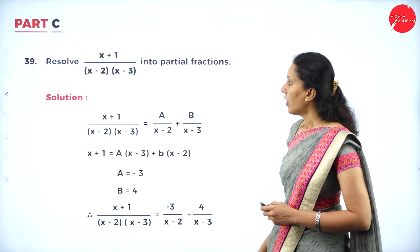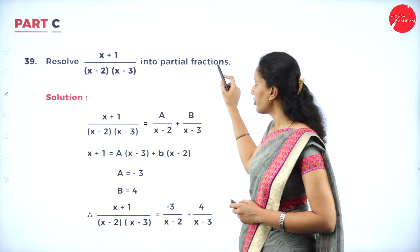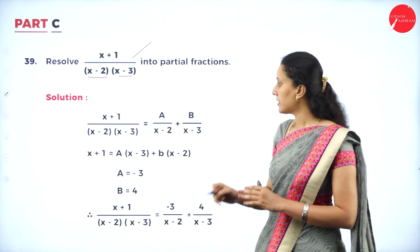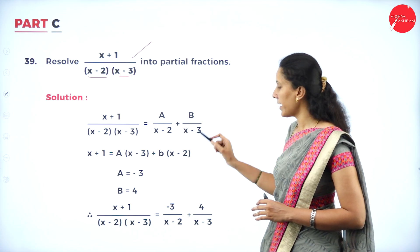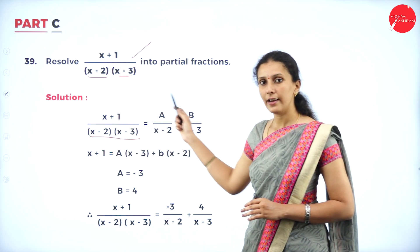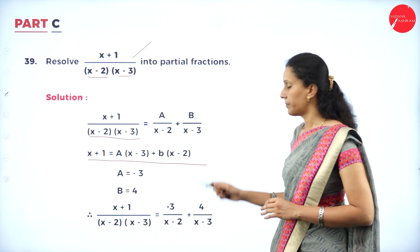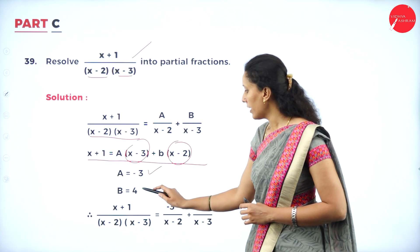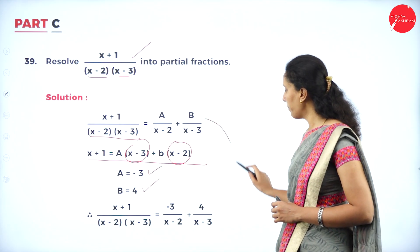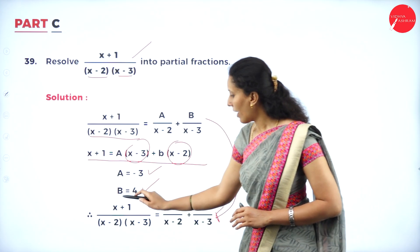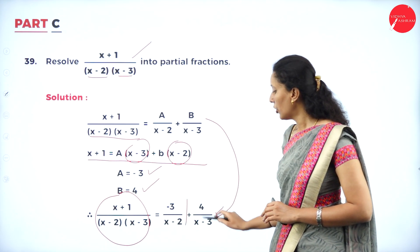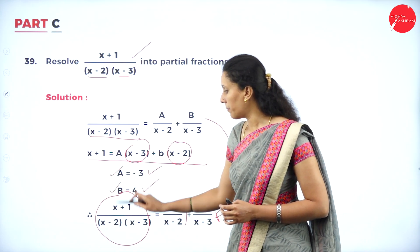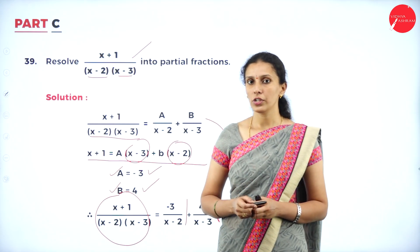Resolve (x+1)/[(x-2)(x-3)] into partial fractions. Since the factors are not repeating, express it as A/(x-2) + B/(x-3). Multiplying both sides, we get the equation. Substituting individual factors equated to 0, we get A = -3 and B = 4. Write the rational function as two simple fractions. Write each step to find A and B, then substitute back into the original equation.